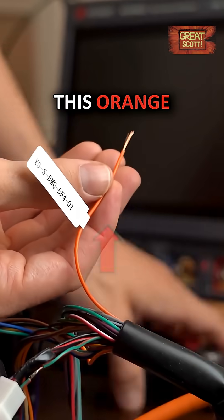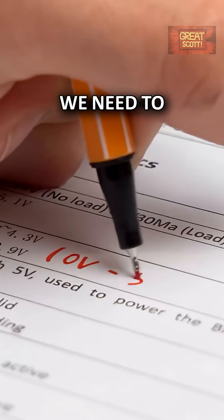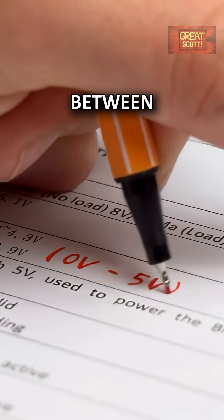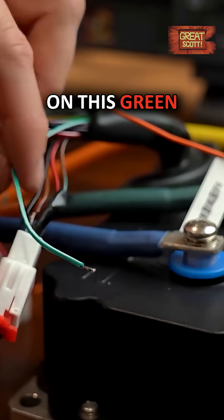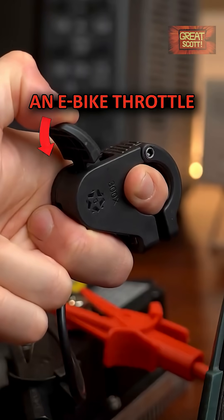We connect this orange key wire to the supply voltage, and to dictate how fast this motor should go, we need to inject a voltage between 0 and 5 volts on this green-white accelerator wire. To do that, I got myself an e-bike throttle.